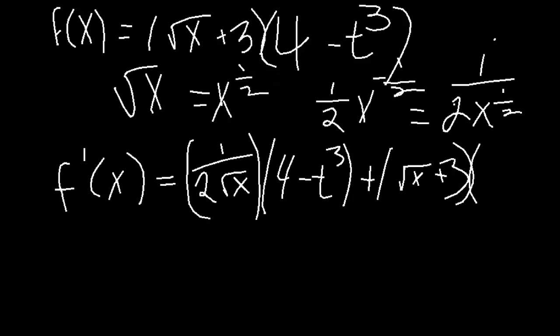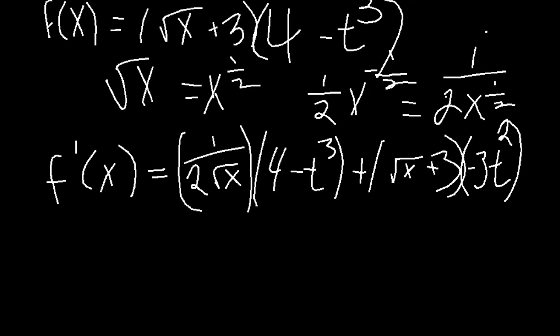We do have to take the derivative of the other part. The derivative of a constant is 0, so we don't worry about that. Using the power rule to find the derivative of x cubed, we bring down the power to get 3x and subtract the exponent by 1 to get x squared, so that's 3x squared. You could distribute further, but for the sake of this video, this is the derivative. Always ask your teacher if they want it further simplified or distributed, but this is the answer.